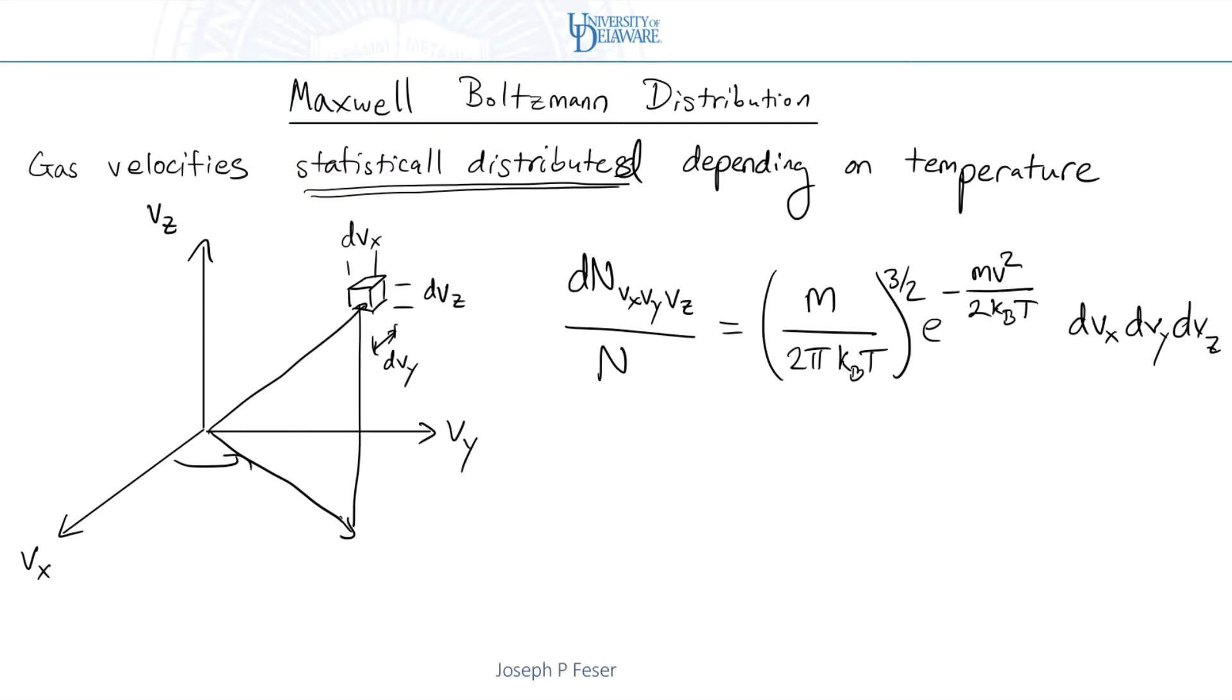And you'll recognize the E to the minus energy divided by KBT as the weighting factor that appears for all statistical thermodynamics distributions. But anyway, so this is a statistical distribution that governs the distribution of velocities in a gas. And just to be 100% clear about this, V squared that's written up there is defined as VX squared plus VY squared plus VZ squared. So it represents the speed, essentially.